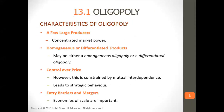Oligopoly has a few large producers with concentrated market power. Products can be homogeneous or differentiated, and firms have control over price. There are entry barriers through mergers, economies of scale, and firm size. Can you think of any examples of an oligopoly that you've seen in your experience?